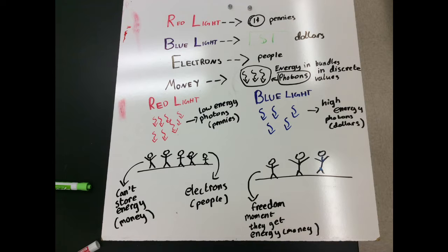The pit is the metal which has trapped all the people, or in this case, our electrons. The red light is like the pennies, which is low energy, not enough to free a trapped person or electron. Whereas blue light is like the dollar bills, which is a bundle of energy, and one bill is enough to free a person.